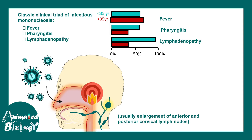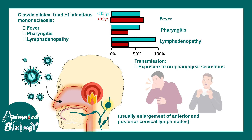Transmission happens via oropharyngeal secretions — not only by kissing but also through coughing and sneezing. All these kinds of oropharyngeal secretions can infect nearby individuals, making EBV quite contagious.